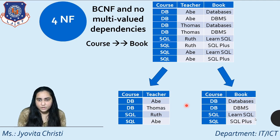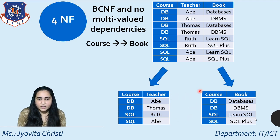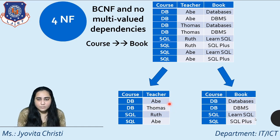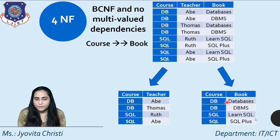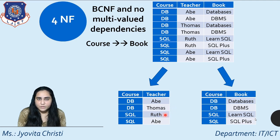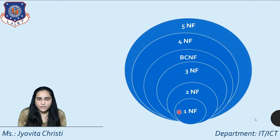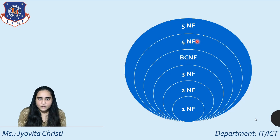A lot of redundancy is gone now. If I want to add a new teacher I can do so without knowing which books to refer, and I can add a new book for a course without assigning a teacher. The delete anomaly is also resolved — I can delete the book 'Databases' from the second table and the course DB still exists. I can also remove a teacher from the first table without affecting the books. This is now in 4NF.